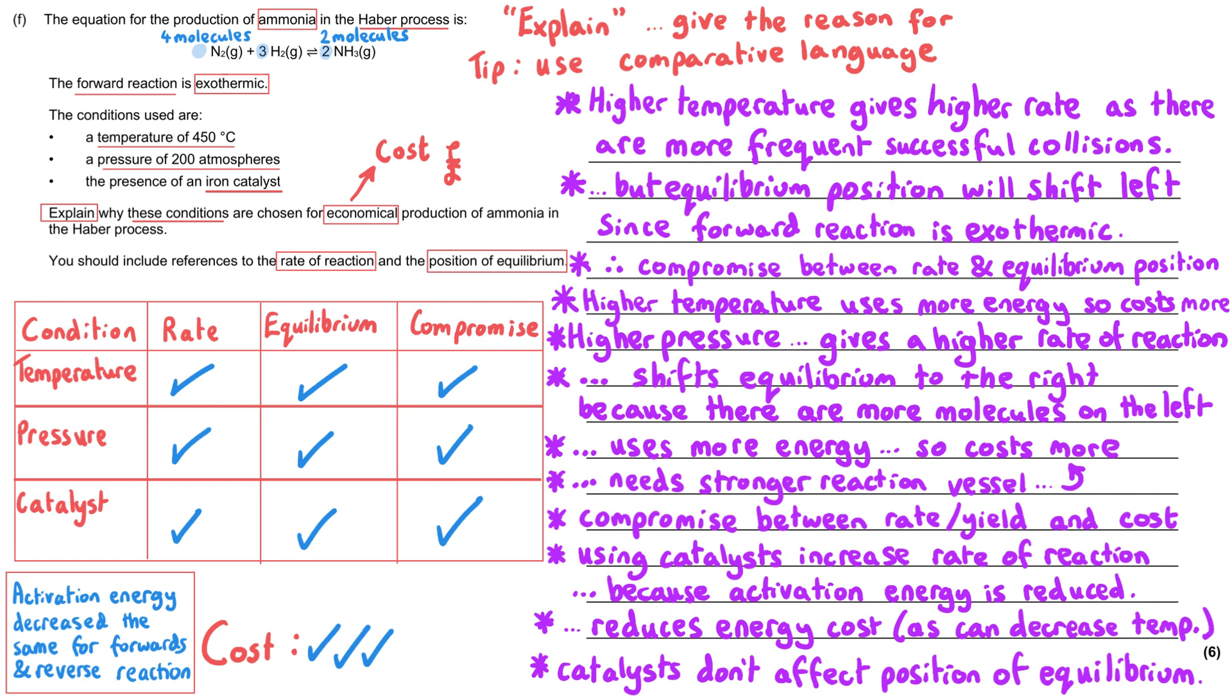And so you can see here, I've made quite a few separate points that I've marked as bullet points. I've absolutely hit every condition and I've hit every aspect of every condition. In reality, you probably wouldn't need to say all of these bullet points to get all six of those marks. What I would say is that you need to mention the temperature and the pressure and the catalyst. You need to mention the rate and the equilibrium and the cost. And I would recommend compromise as well.